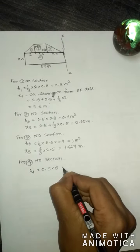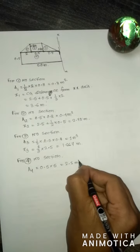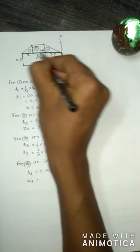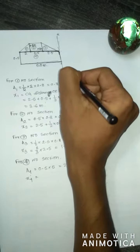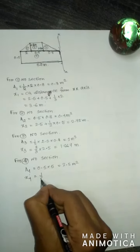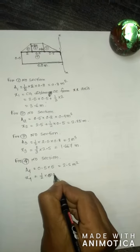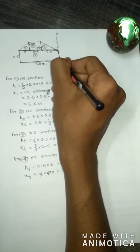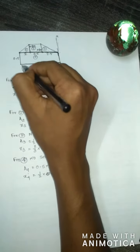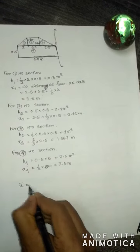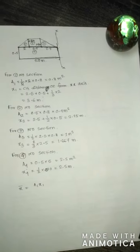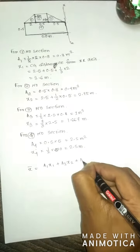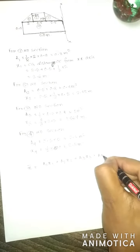x3 equals 1.667 meters. For section number 4, which is a rectangular block, area A4 equals 0.5 into 5 into 0.5, equal to 0.6 m² — wait, actually 2.5 m². x4 equals half of the base, 0.5, so x4 equals 0.5 meters.